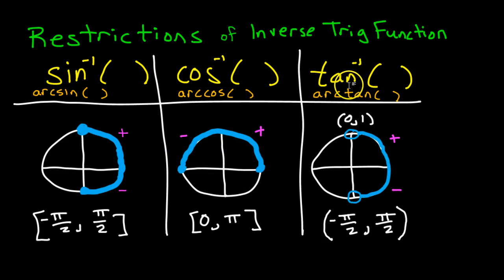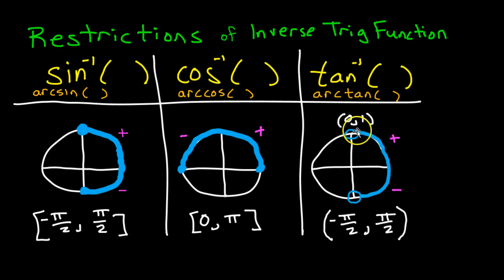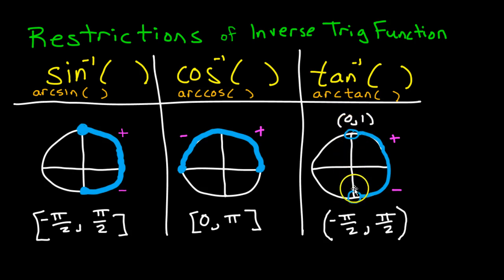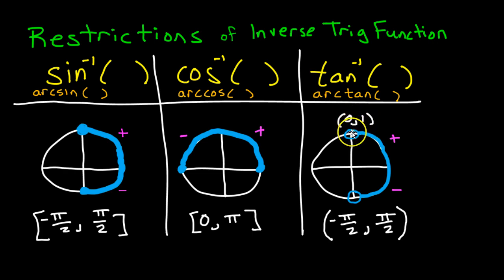Inverse tangent or arc tangent is only defined for the right side of the circle, from negative pi over 2 to positive pi over 2. We cannot include the endpoints because tangent is undefined at these endpoints. At pi over 2, tangent would be y over x — that's 1 over 0. You can't divide by 0. That's undefined.